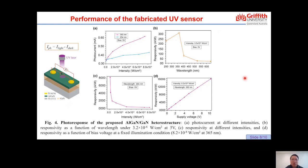Consequently, the electron-hole pairs will be separated by the built-in potential, and electrons will be accommodated in the quantum well. Thus, the 2DEG density will increase significantly under 365 nanometer illumination. The responsivity of the detector as a function of bias voltage is shown in Figure 4d, illustrating that the responsivity increases almost linearly with increasing bias voltage.